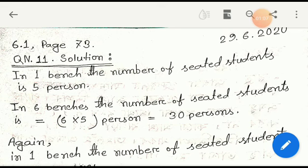Dear students, once more reading: There are ten benches in a class. Five students can be seated in each of the six benches. Four students can be seated in each of the remaining four benches. How many students can be seated all together in ten benches?